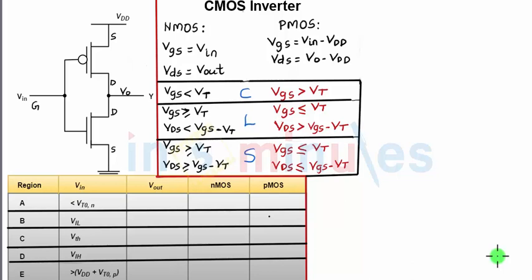Welcome to 'In 5 Minutes.' The agenda of this clip is to identify the region of operation for the NMOS and PMOS transistor for regions C, D, and E.